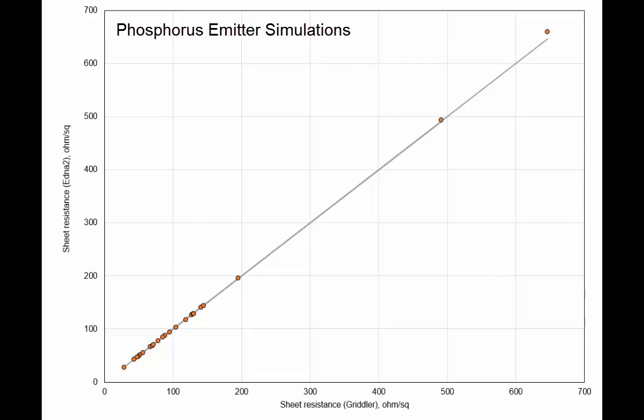So here we can see that the agreement in sheet resistance is very good, and the average fractional deviation between the two calculations is less than a percent, as well less than a percent.